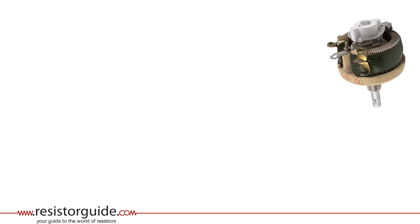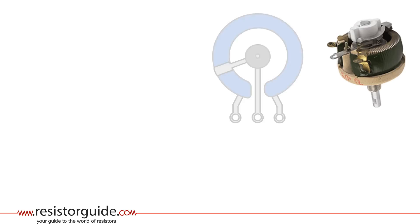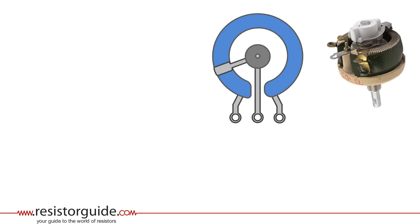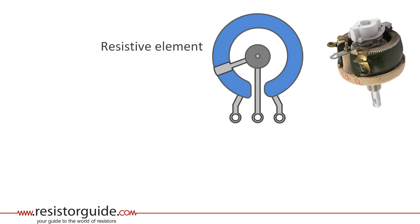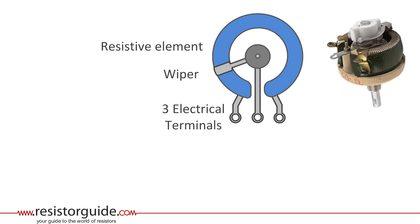Here you see another example of a potentiometer, and I will explain more in detail how they function with this schematic drawing. There is a resistive element that can have different constructions, such as carbon composition or wire wound. Then there is a wiper that rotates and slides over the resistive element. There are three terminals: one is connected to the wiper, and the other two to the ends of the resistor.